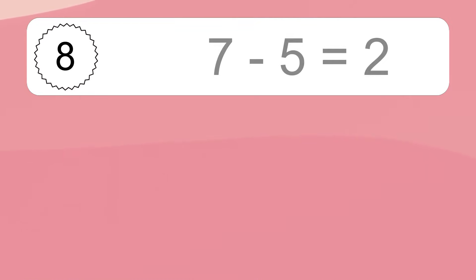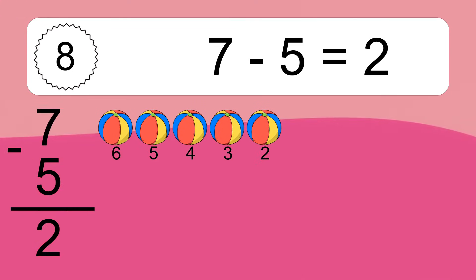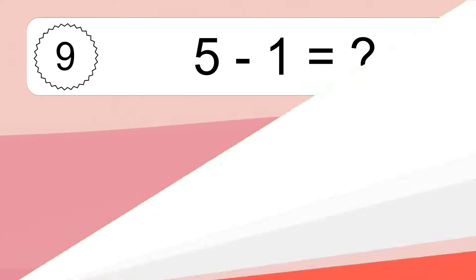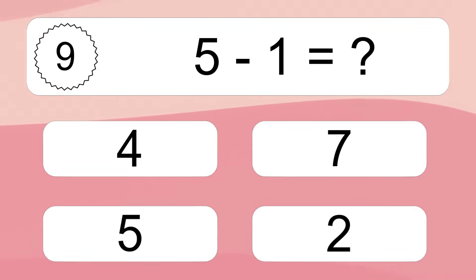7 minus 5 equals what? 7 minus 5 equals 2. Let's count it: 6, 5, 4, 3, 2.